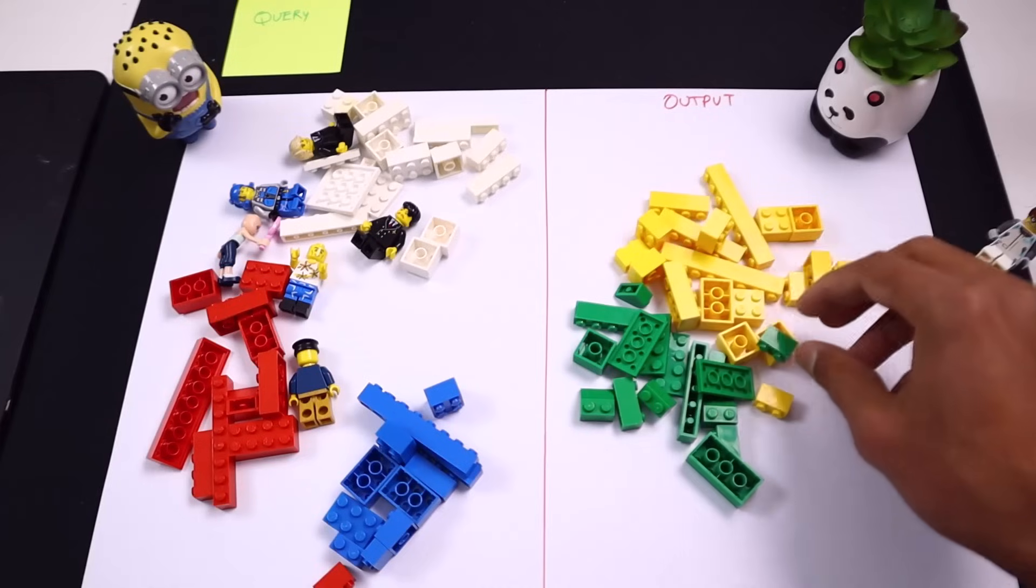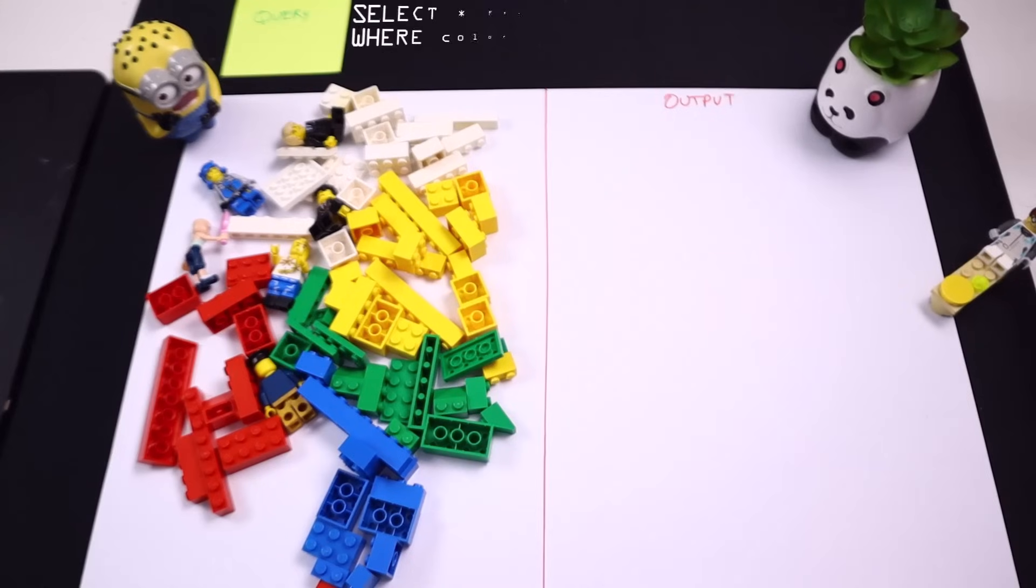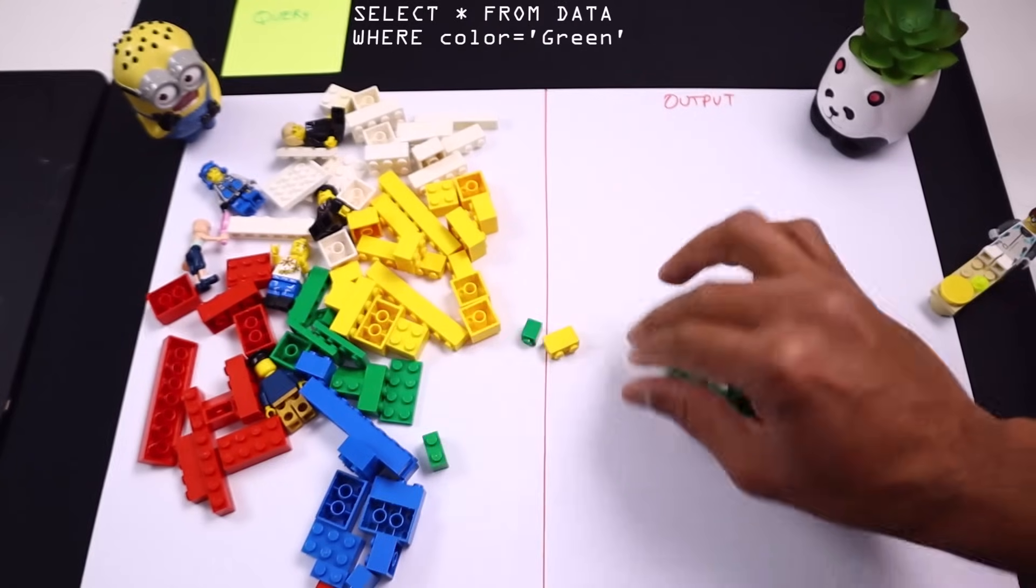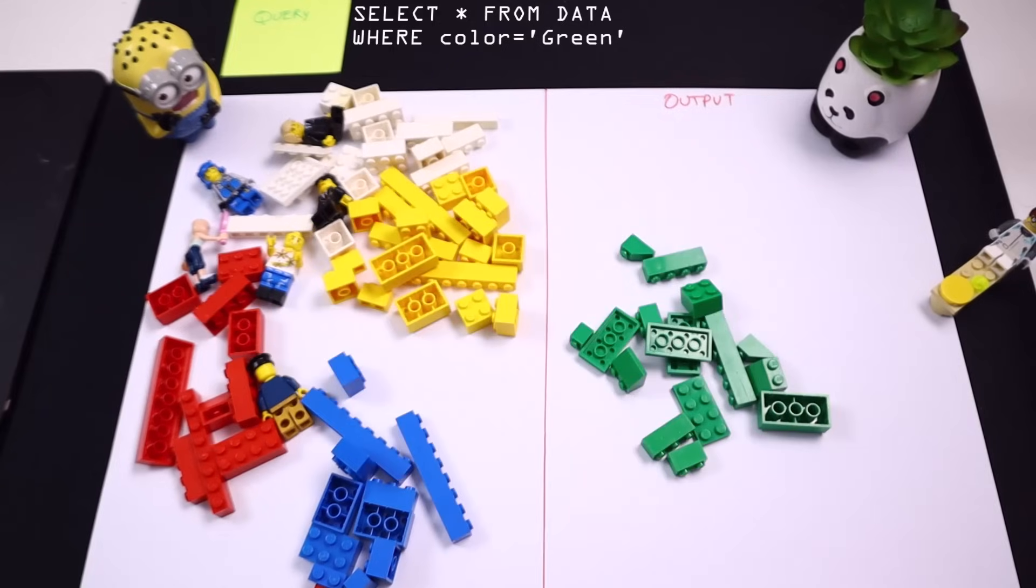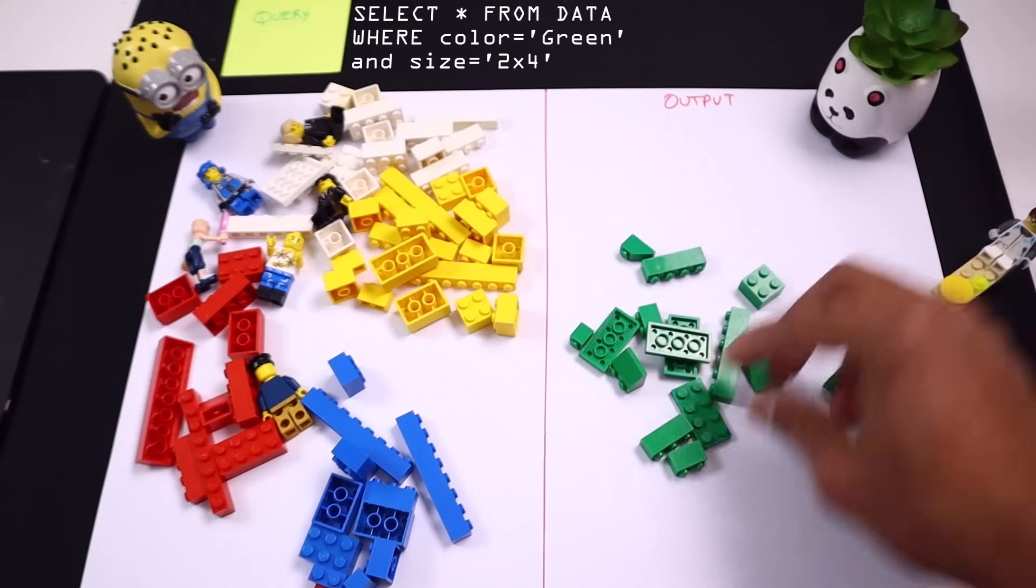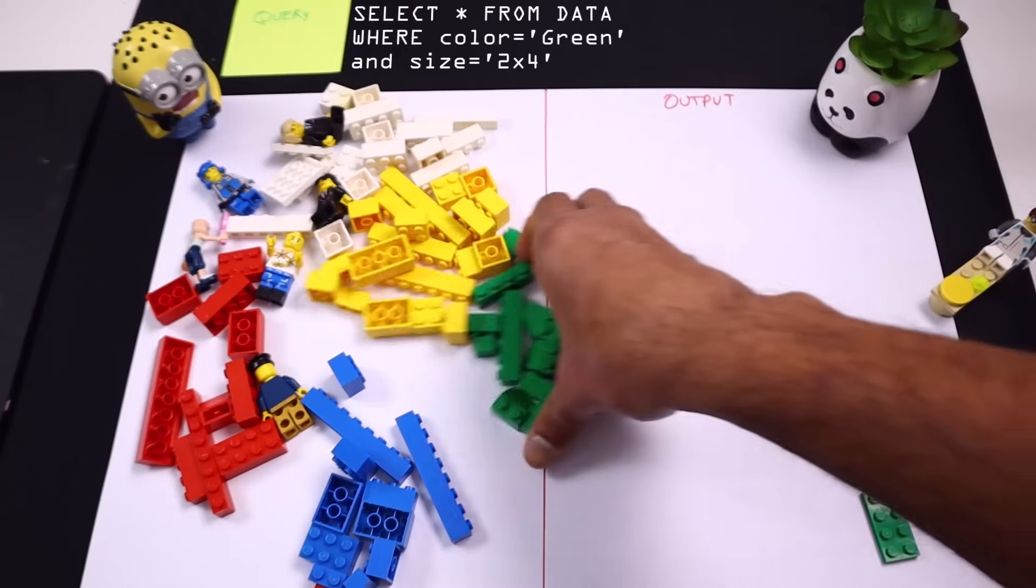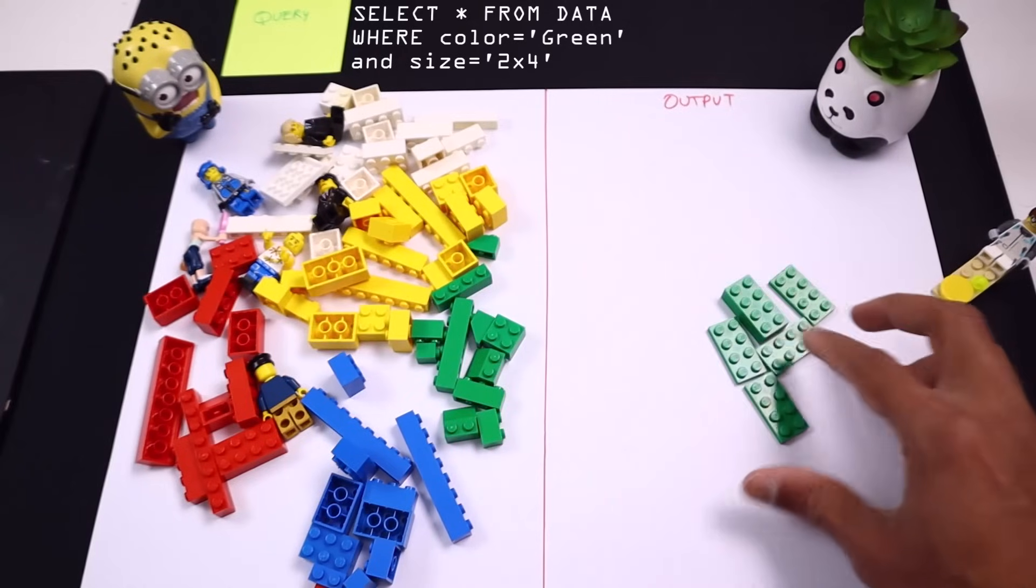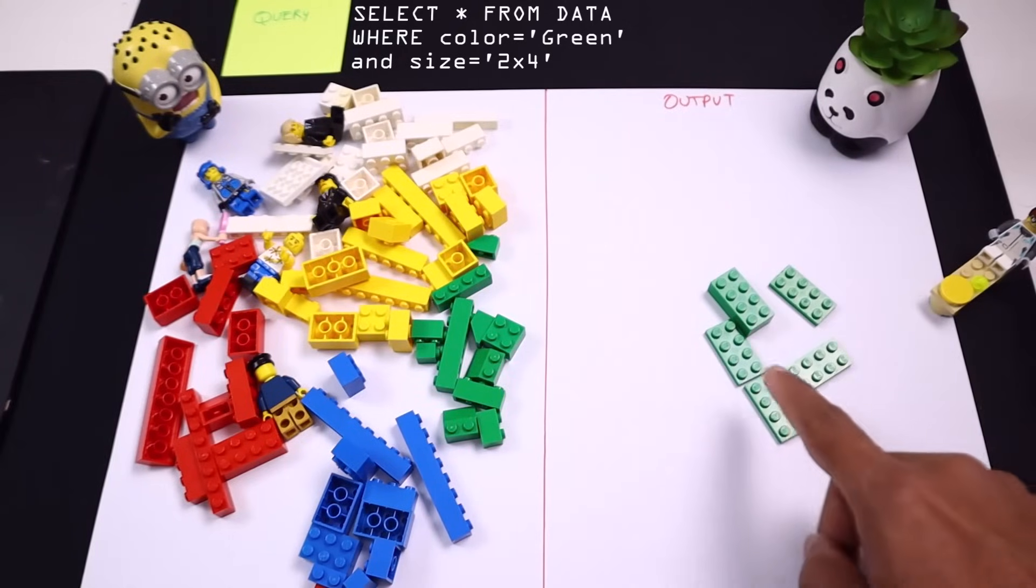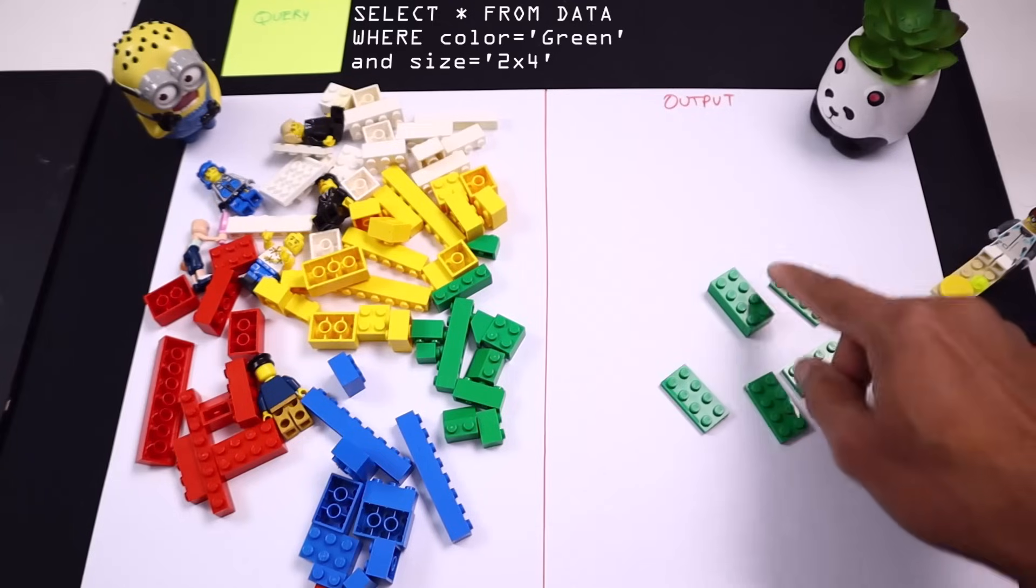For example, instead of this we could say select star from data where color is green and size equal to, for example, two by four. So all the bricks that have two by four structure are selected. We are saying color needs to be green as well as the size needs to be two by four.